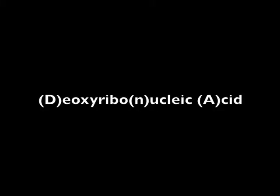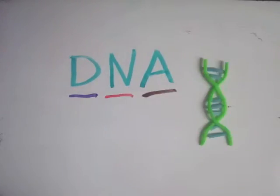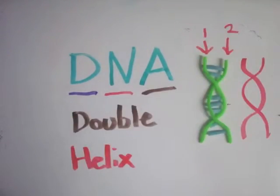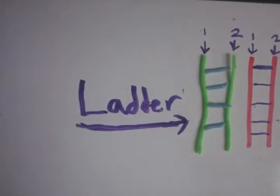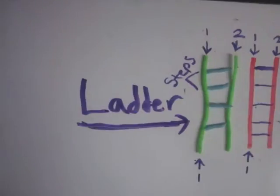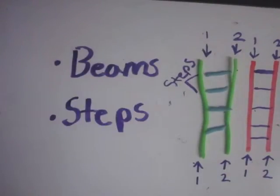DNA is the abbreviation for deoxyribonucleic acid, and it is formed in a double helix structure. But an undone double helix structure looks much like a ladder with one beam and then another with many steps. But what do these beams and steps mean?